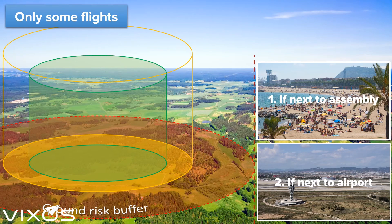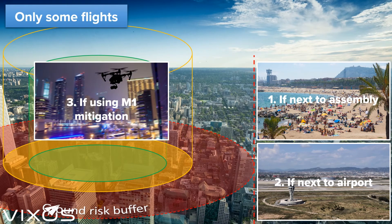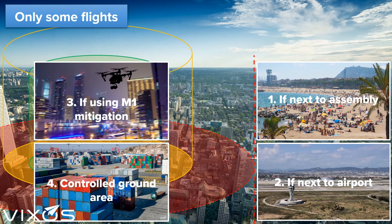The two other situations only apply if you are operating in an urban area. Third, if you are using M1 mitigations — this is an option you have in step number 3 in the SORA process, and it typically means that you are using special circumstances to mitigate the risk, such as flying during night time where there are fewer people on the street. Fourth, when you are operating in a controlled ground area inside an urban area. A controlled ground area means that the operational volume and ground risk buffer is inside some perimeter that you can keep the public out of.